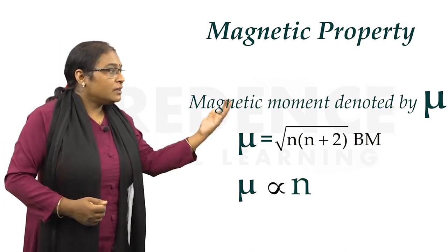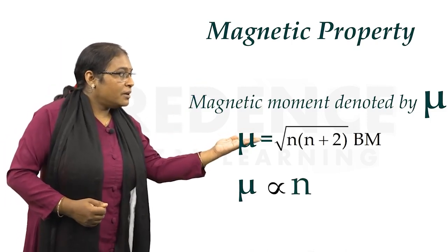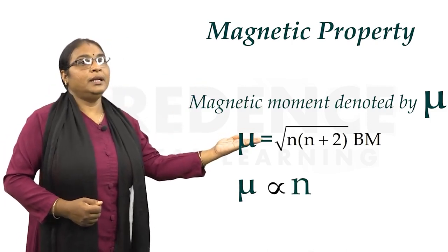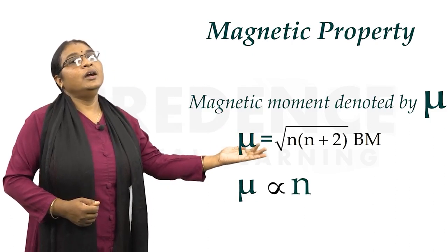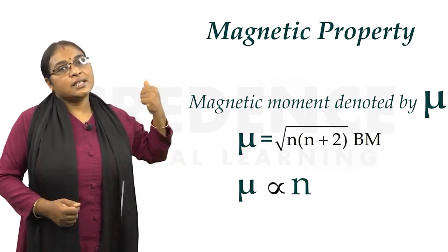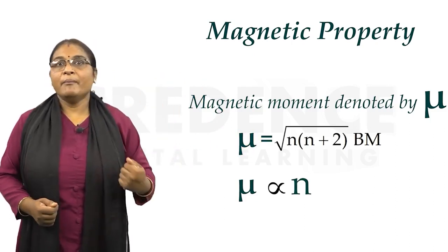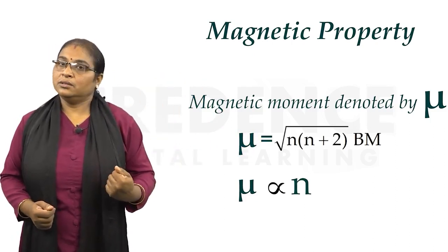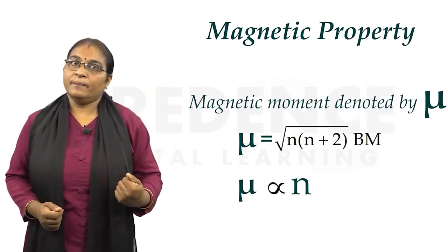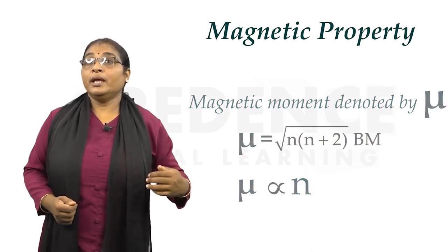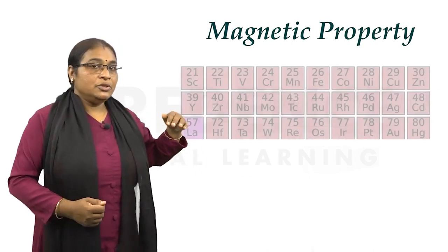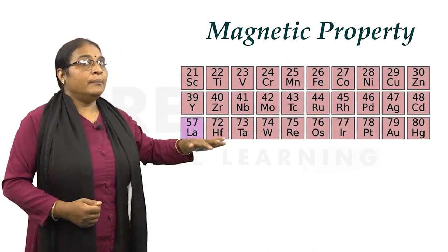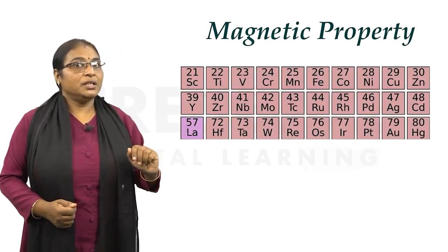We can see that mu is directly proportional to n — the more unpaired electrons there are, the greater the magnetic moment will be. We have already seen the d-block configuration in this context.